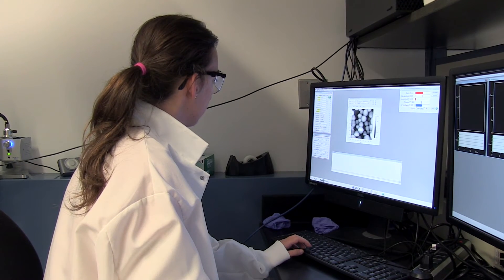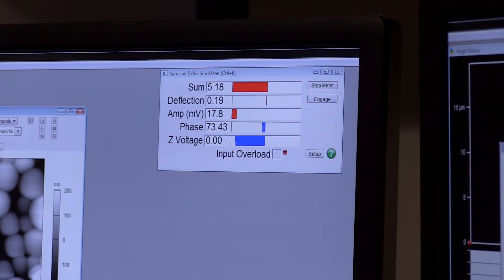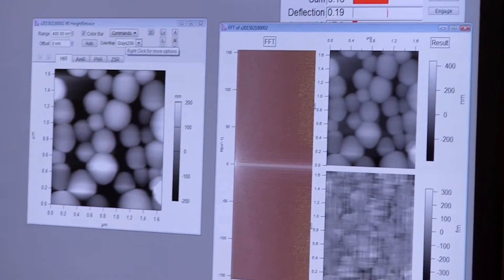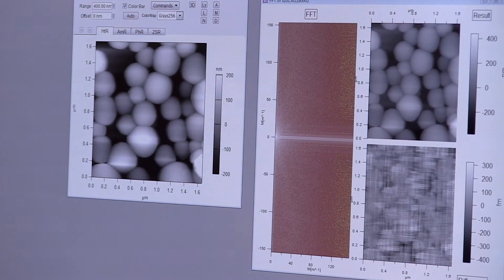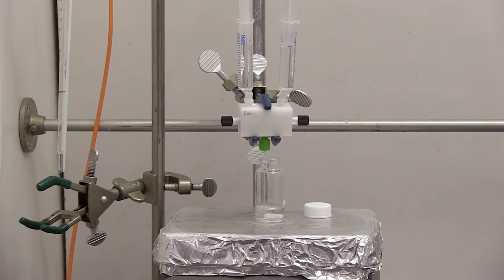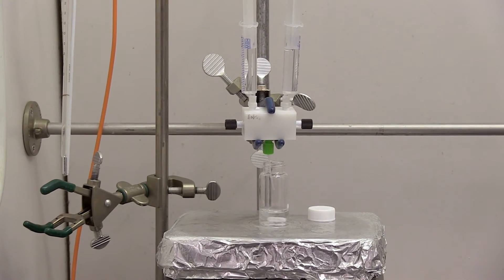Previous technologies required quite a bit of chemical synthesis just to make a small amount of the material. Our approach essentially requires no chemistry. We can take off-the-shelf commercially available plastics and then use a physical approach to actually make the Janus colloids.